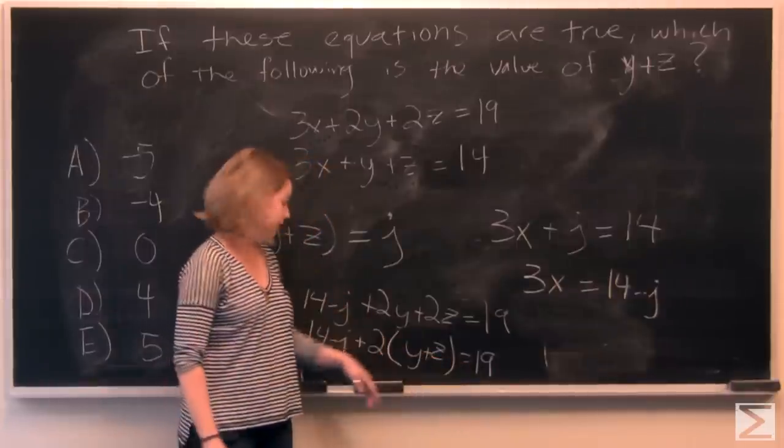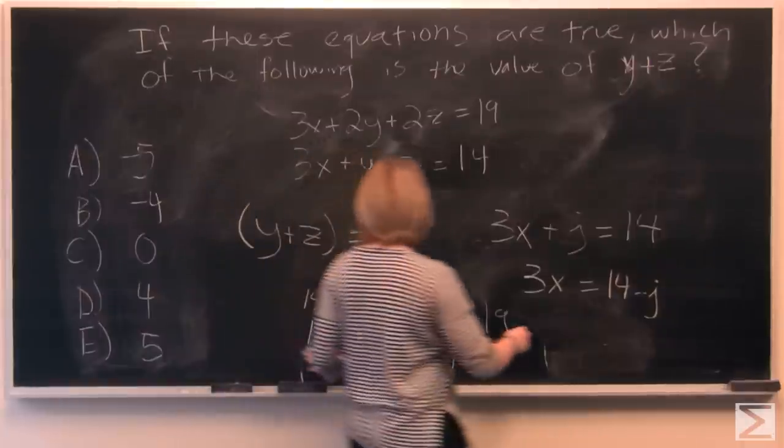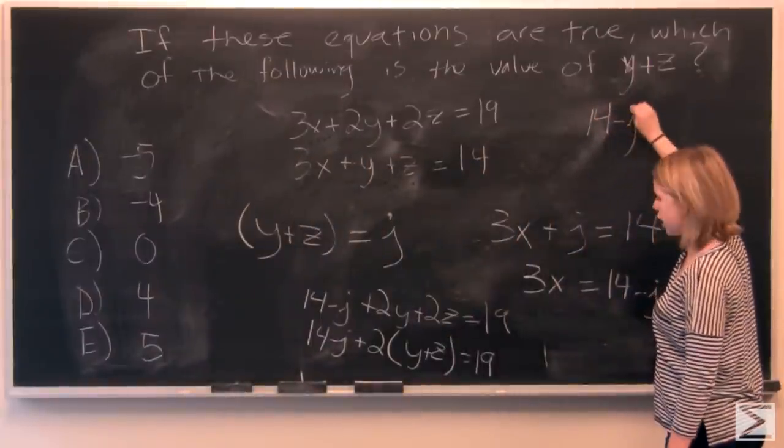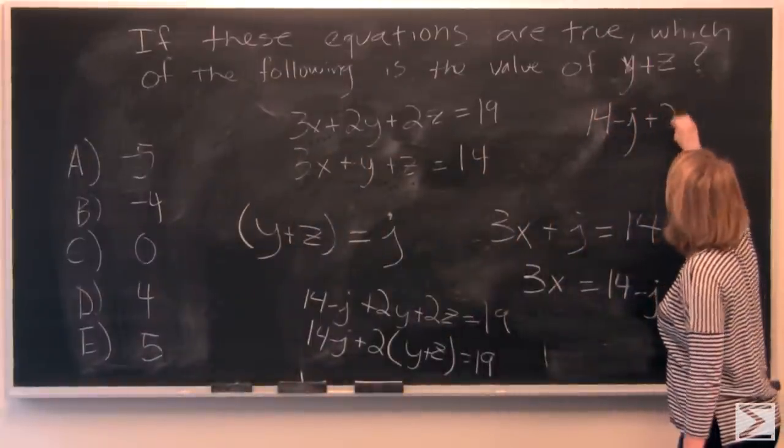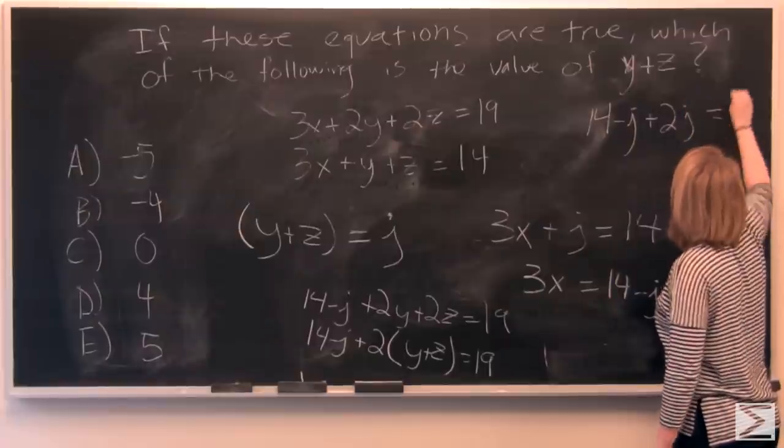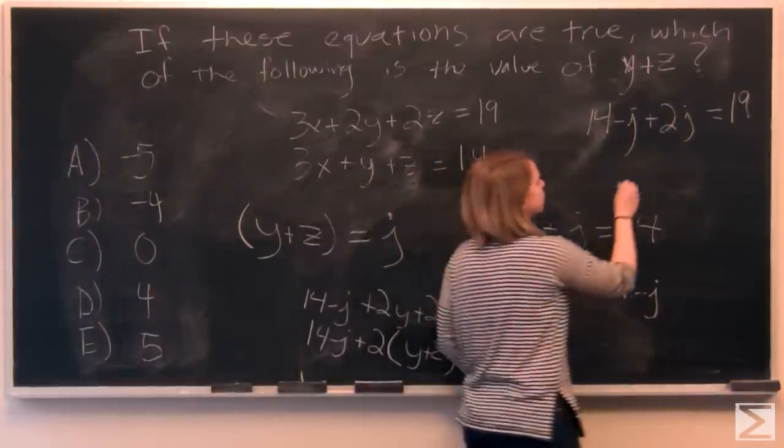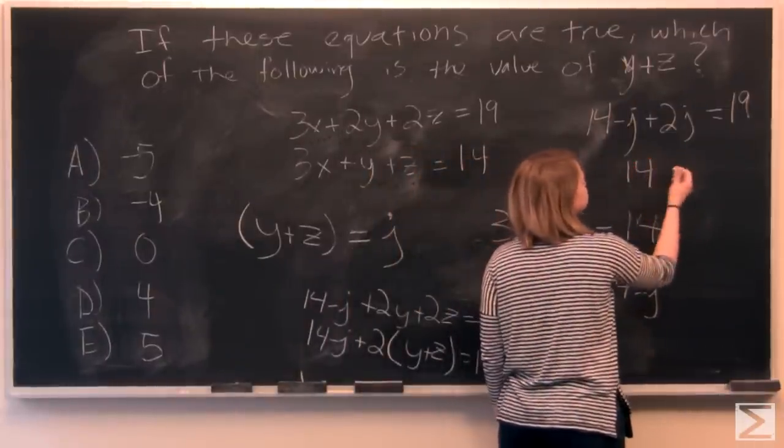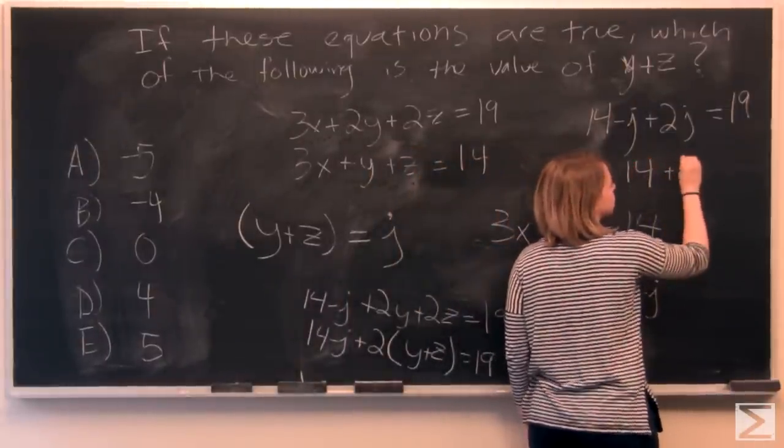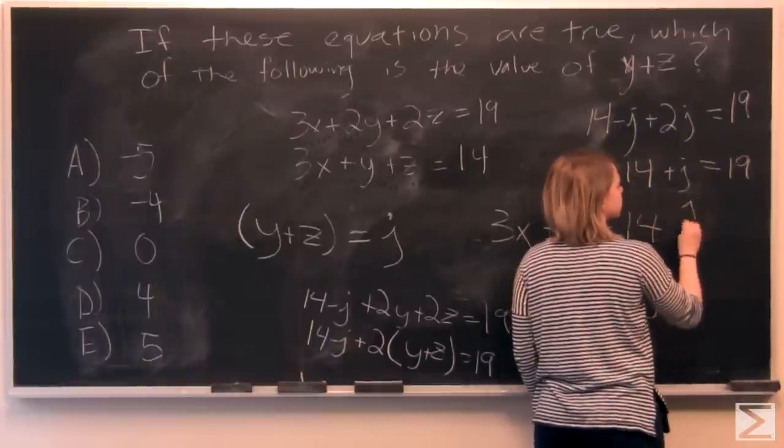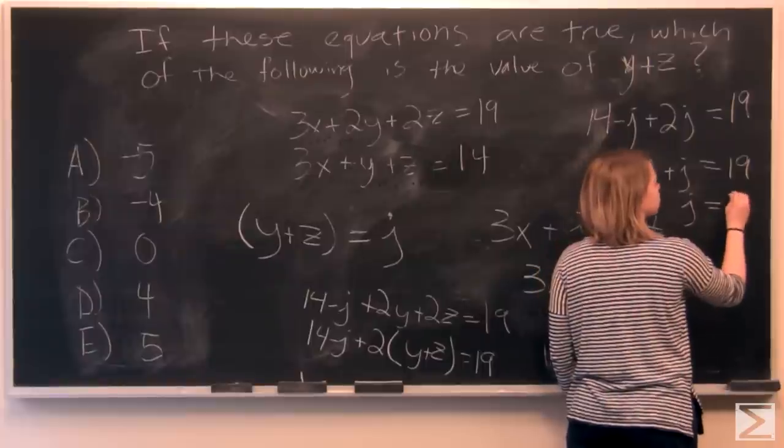And therefore what we have is 14 minus j plus 2 times j, if we substitute j for y plus z, equals 19. So let me write that up here. We've got 14 minus j plus 2j equals 19. And so if we do a little algebra here, we've got 14 plus j equals 19. And if we subtract 14 from both sides, we'll find that j equals 5.